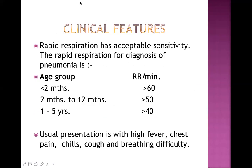Pneumonia can be diagnosed by clinical features even without investigation. In clinical practice, pneumonia is diagnosed by faster breathing and difficulty breathing. Rapid respiration has acceptable sensitivity for the diagnosis of pneumonia. According to age group: less than 2 months — more than 60 breaths/min is abnormal; 2 to 12 months — more than 50 breaths/min; 1 to 5 years — more than 40 breaths/min is tachypnea.